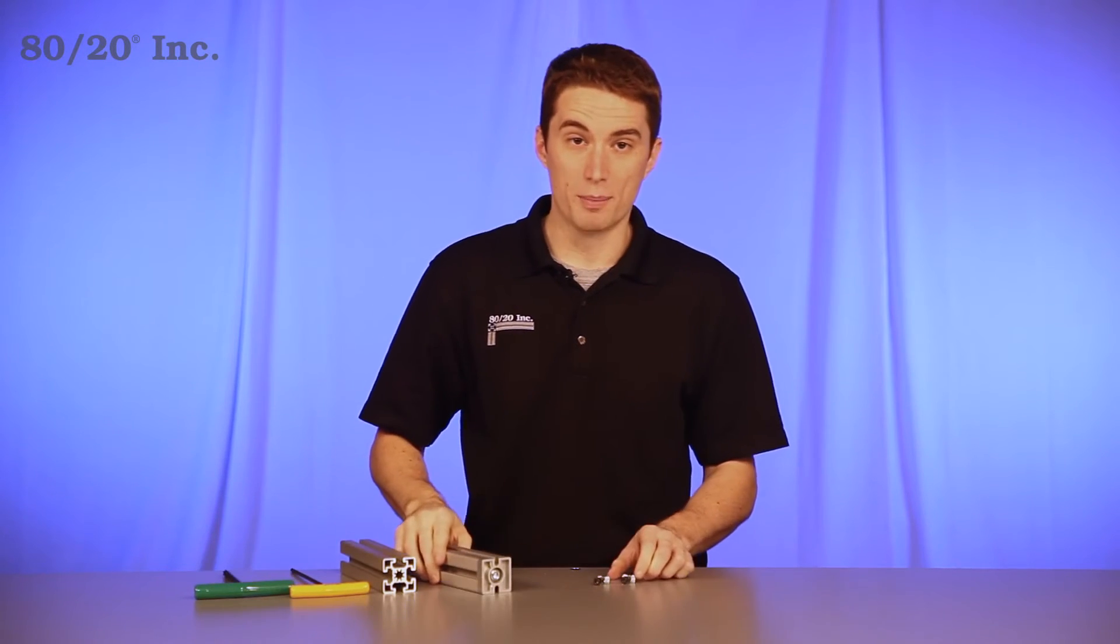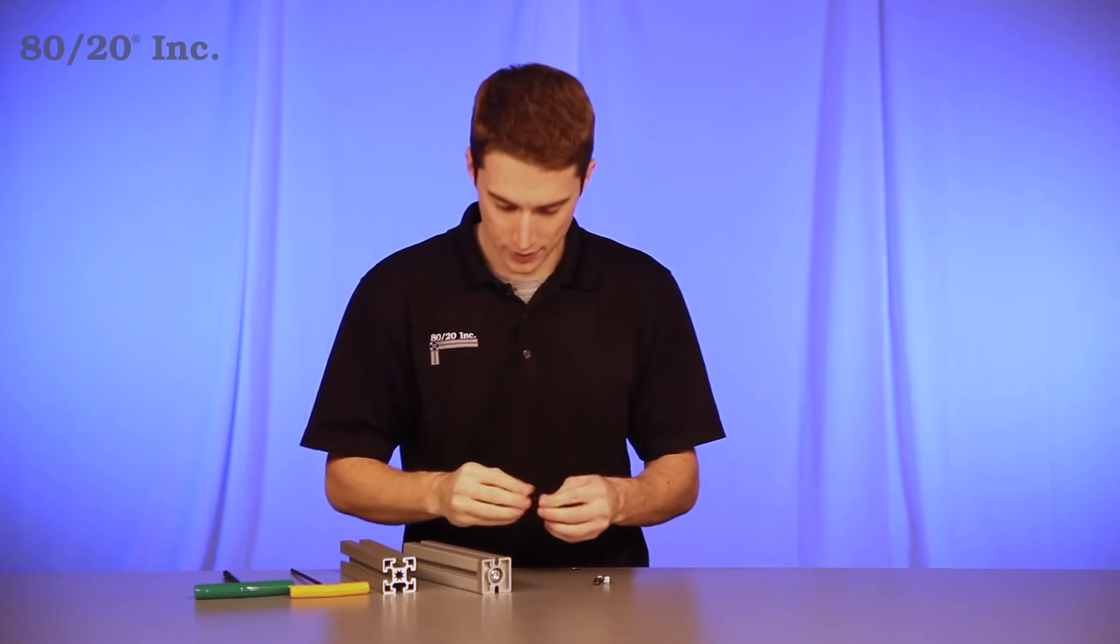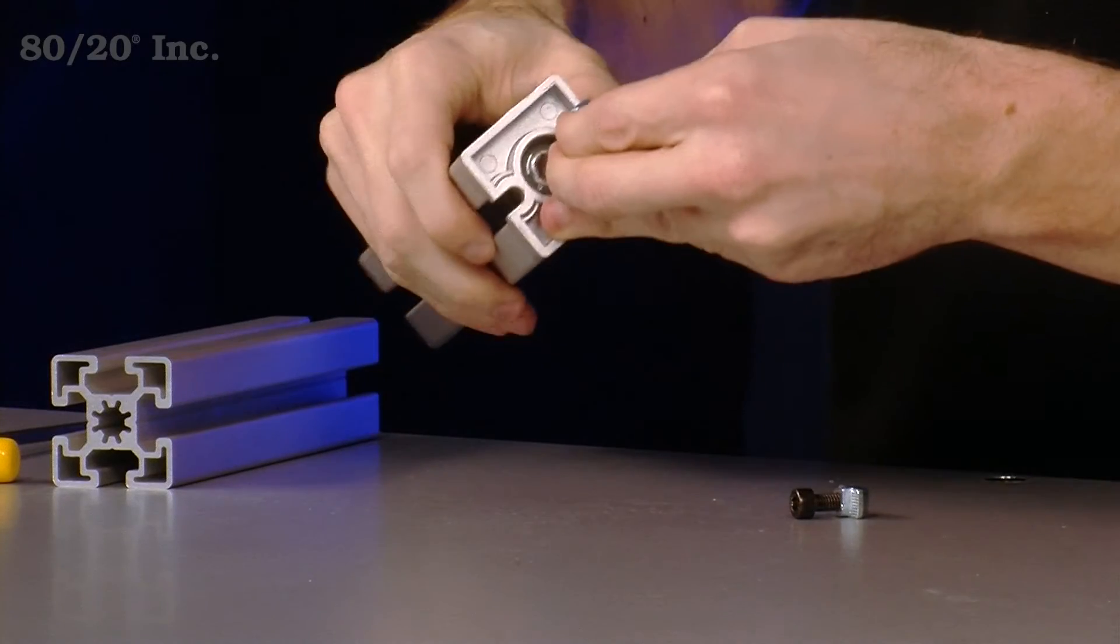At this point we're ready for our bolts with the pre-loaded T-nuts in them. We'll take those and place them into the open slots on the plate connector.